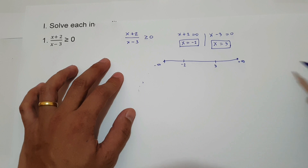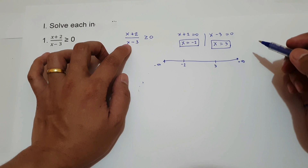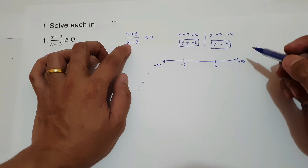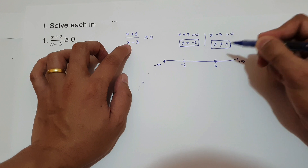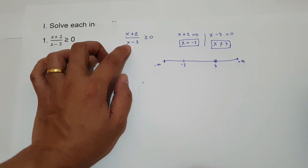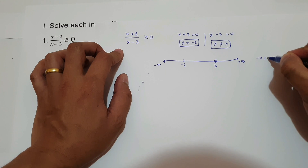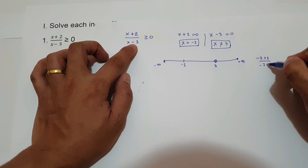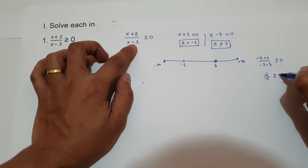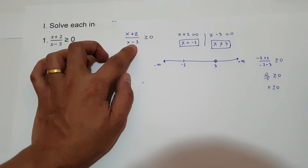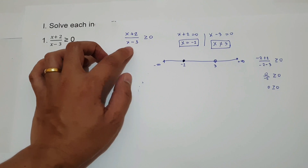Next, we're going to check whether negative 2 and 3 are part of the solution. If we substitute 3 on the denominator, we get 0 on the denominator — that means undefined — so 3 is not part of the solution. We give it an open circle. For negative 2, substituting gives us negative 2 plus 2 over negative 2 minus 3, which equals 0 over negative 5, so 0 is greater than or equal to 0 — that is true. So we give negative 2 a closed circle.